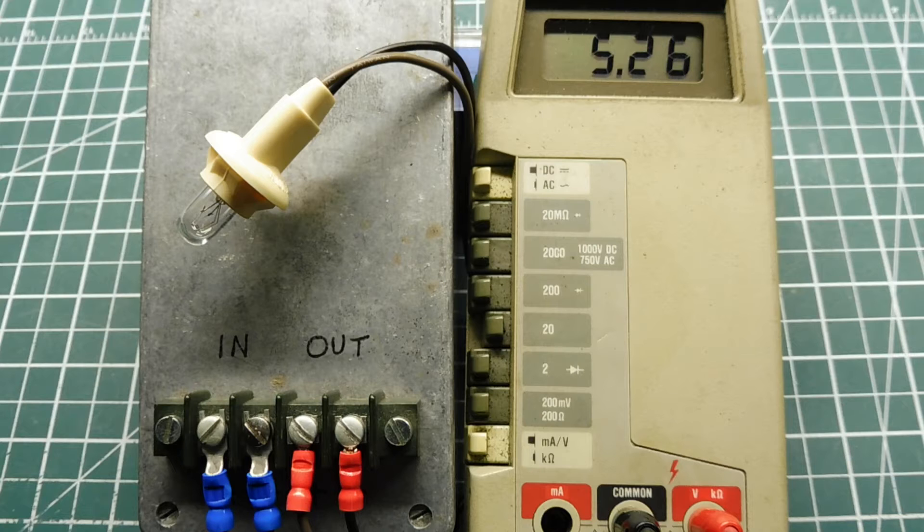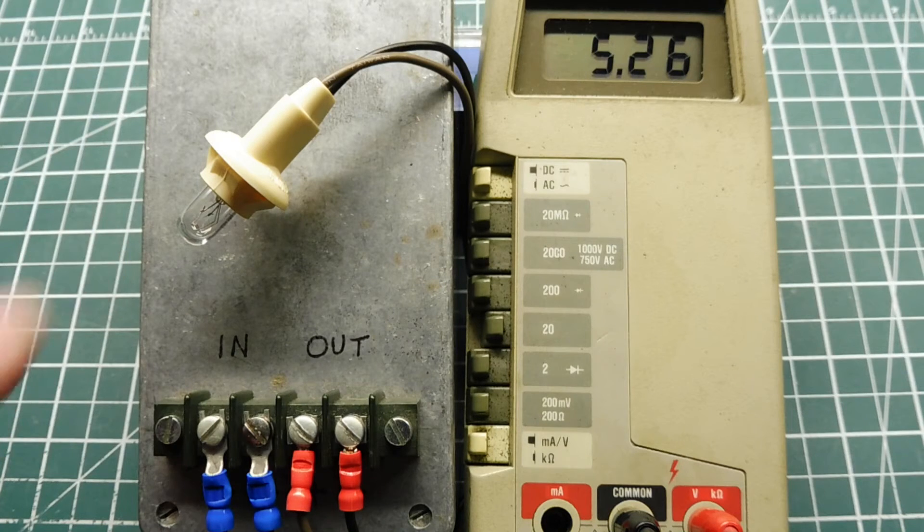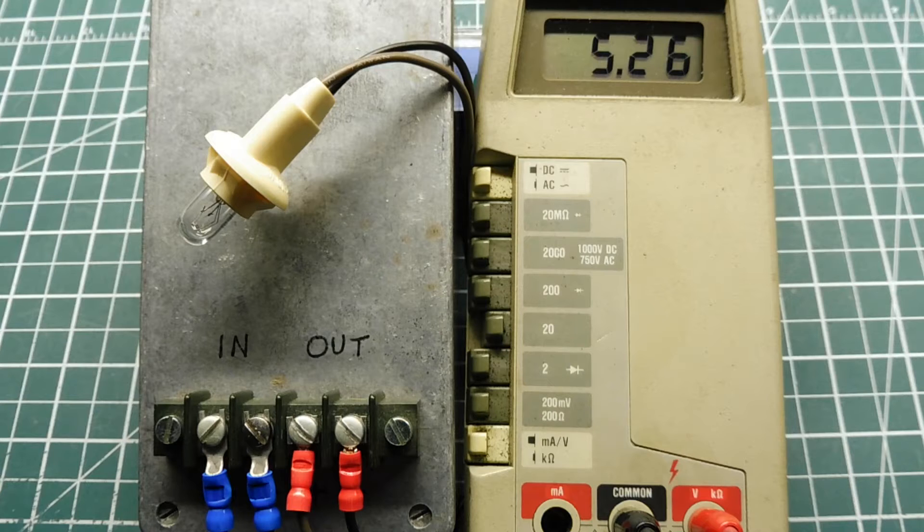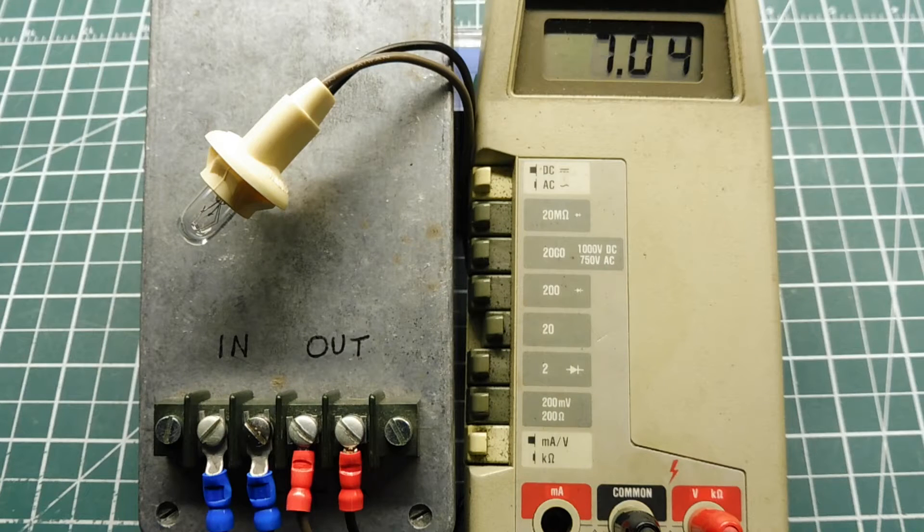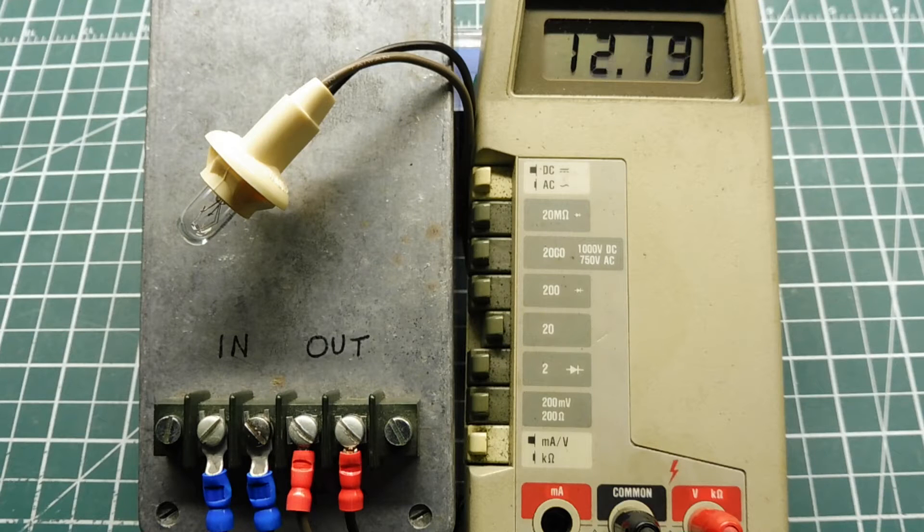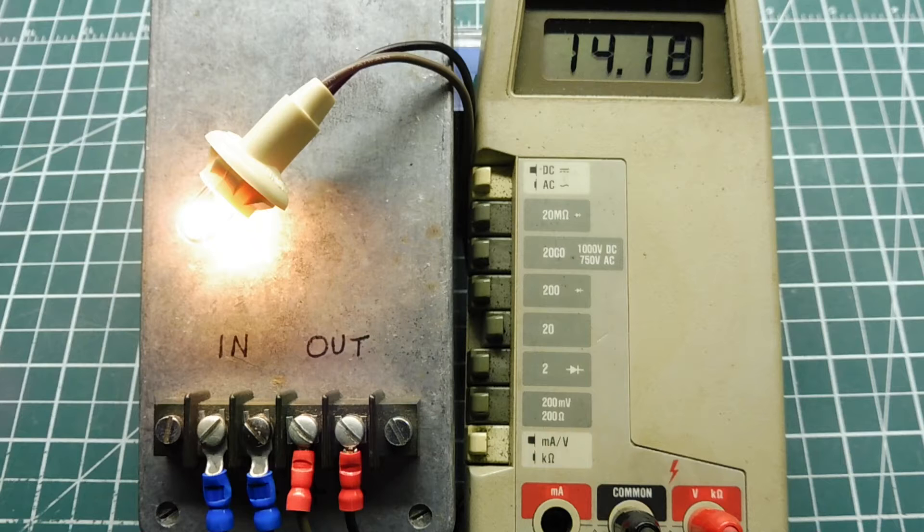So right now I have 5.26 volts fed into the control box, and you can see the load is off. So I'll increase the voltage, and she should come on around 13.6 volts, so we'll take it up to the cut-in voltage. So right there, the load came on.